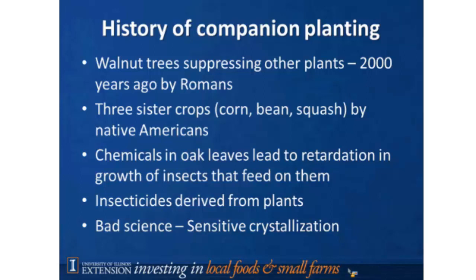A positive historical example: Native Americans had for years grown what they called three sister crops — corn, bean, and squash together. All three provided synergism to one another. The tall corn afforded a good trellis for the bean to climb. The squash, with its very large broad leaves, was planted at the base of the planting and afforded shade and better soil moisture for the corn. So all three benefited from being planted near each other — a very common system used by Native Americans.